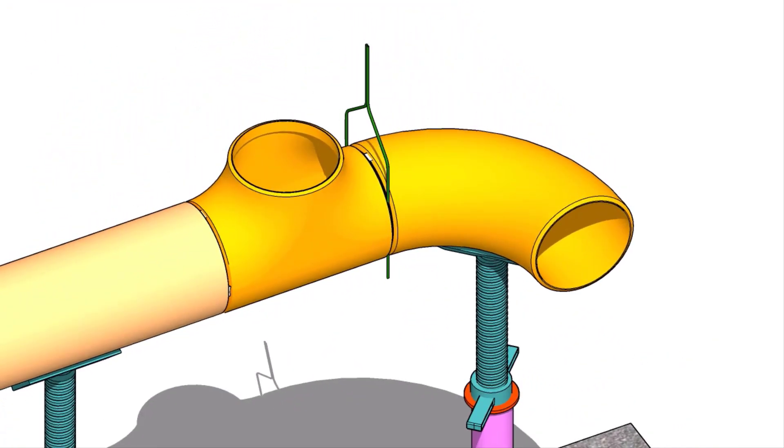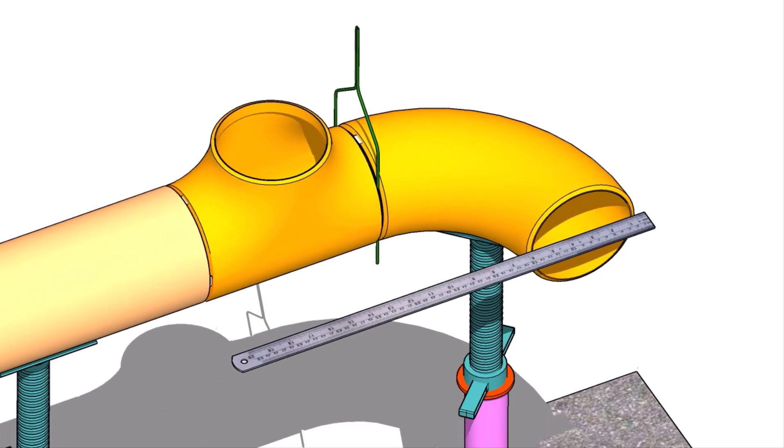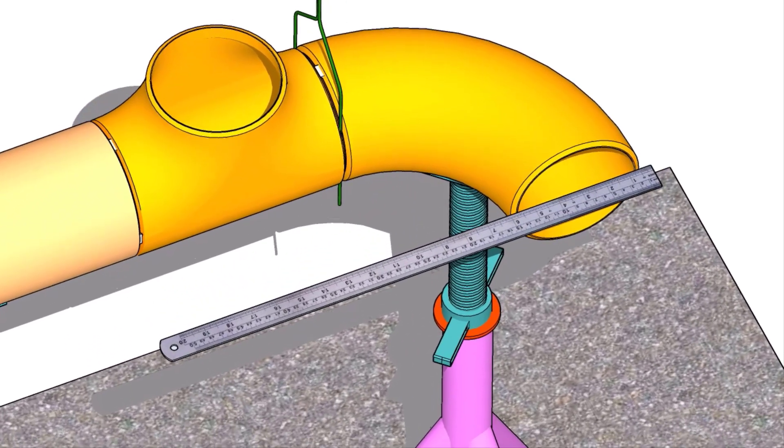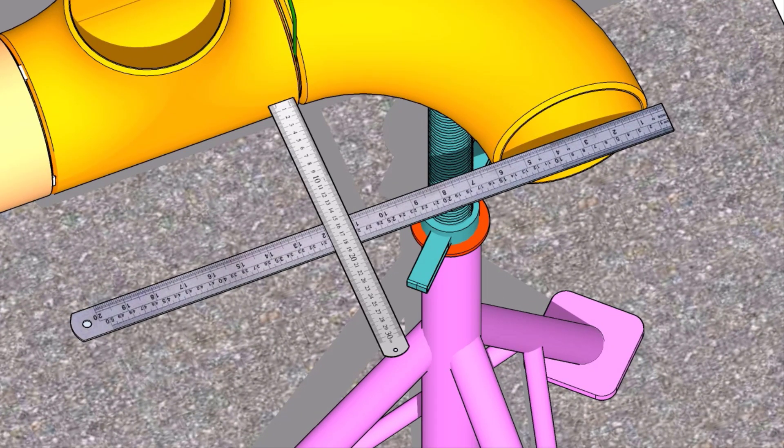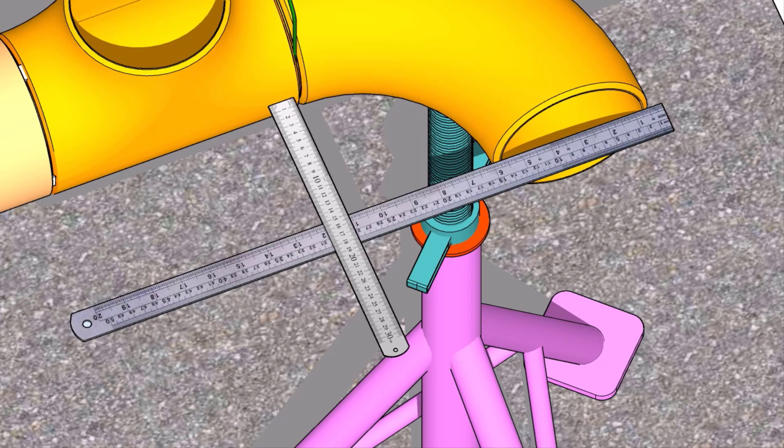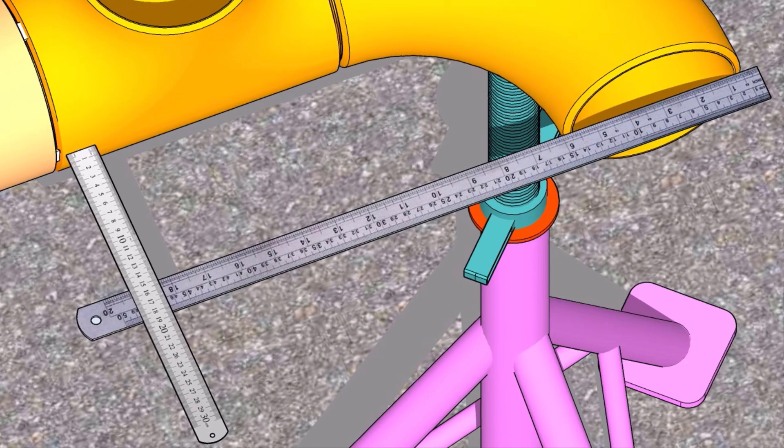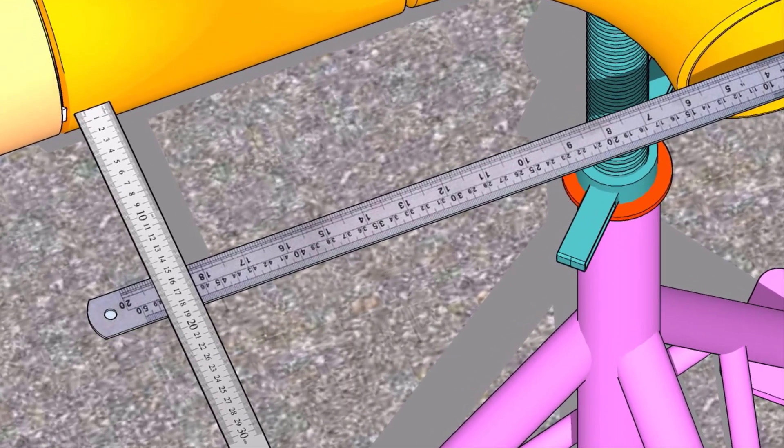Now, put a scale on the face of the elbow horizontally. Check the distance between the scale and the side of the tee at its ends as shown. If necessary, turn the elbow as required and maintain both the measurements equal.